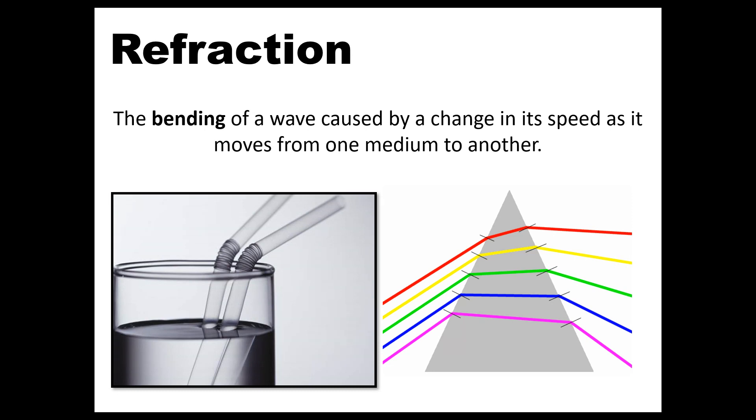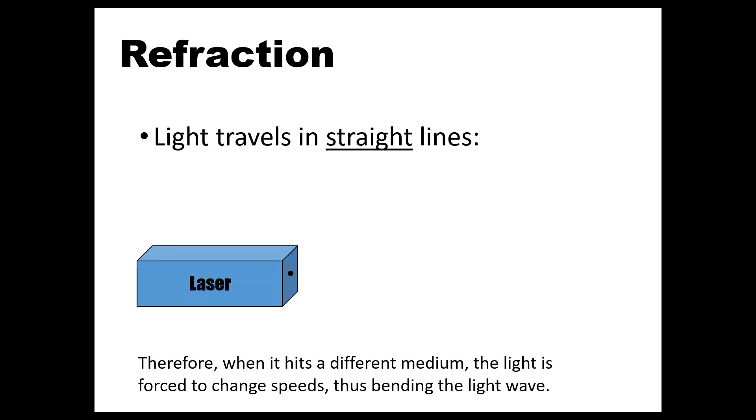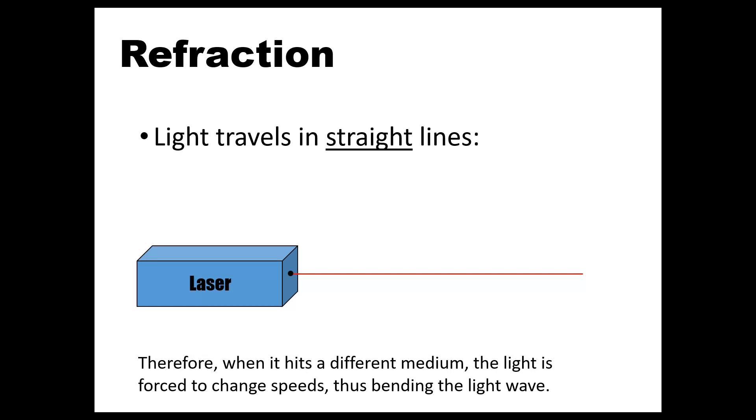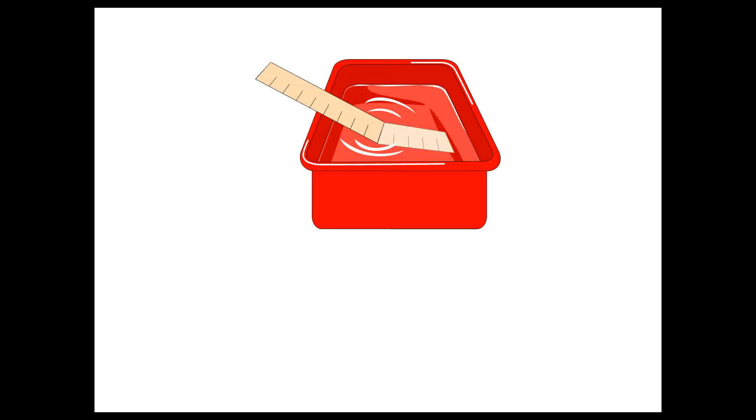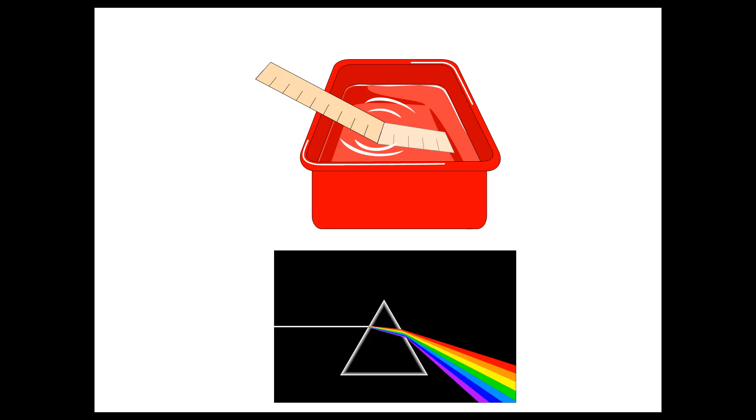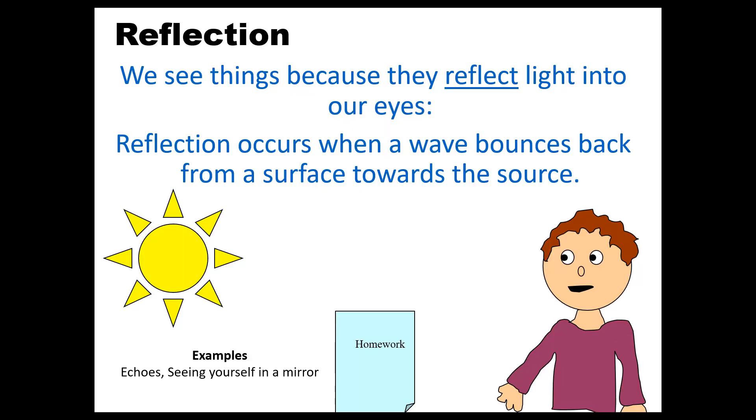So we can see this here in the example of the straw in the cup of water. It appears that the straw looks bent because the light wave is traveling through the air, and then when it hits the glass, it slows down. And so it looks as if it's a bend to the observer. You do need to know one neat thing about light waves is they travel in a straight line. So when a light wave hits a different medium, it's going to slow that wave down, and so it's going to create a bend in the light wave, which we see as refraction. You can see that here and in the example of a prism. So that is refraction.